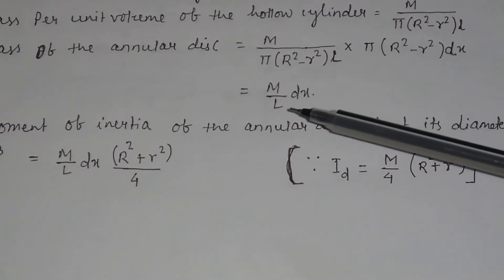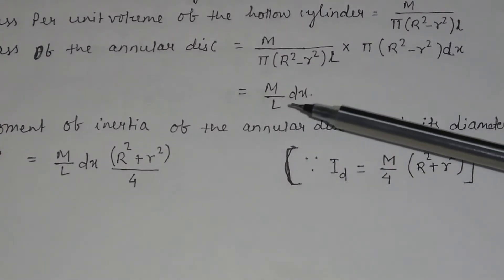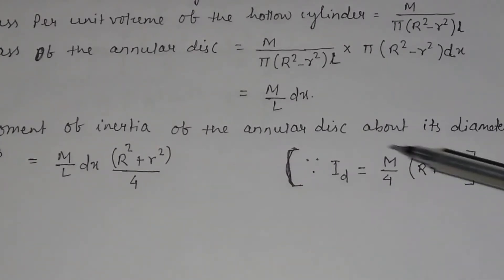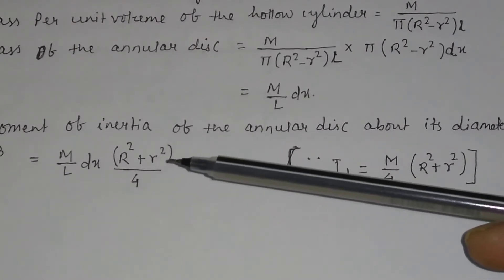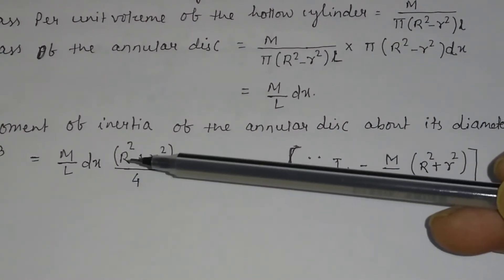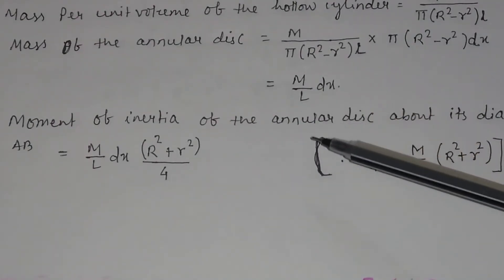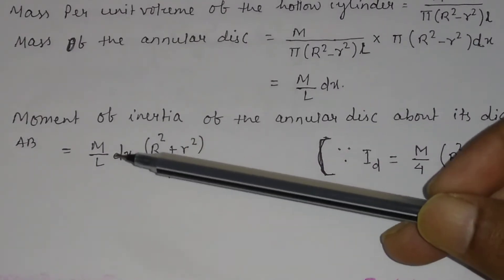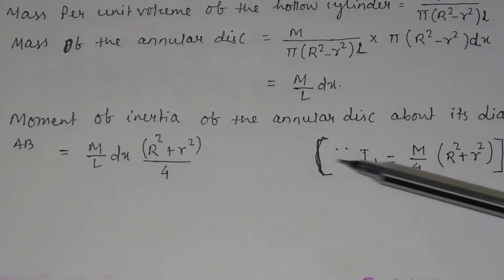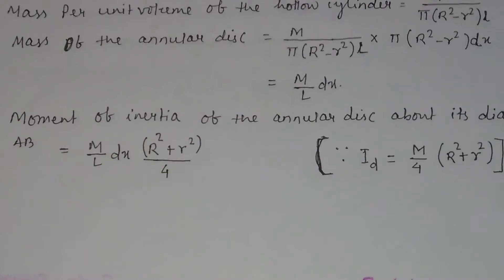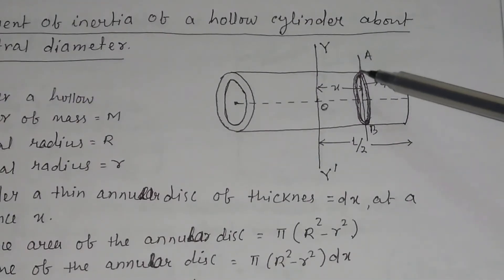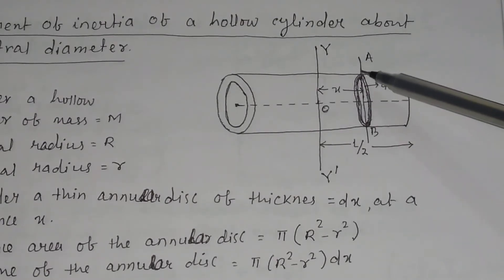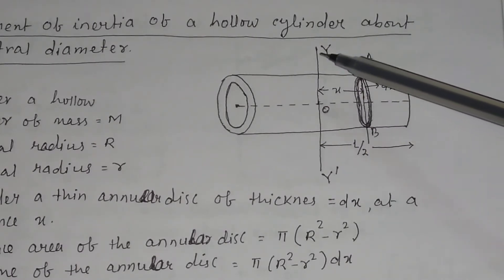Here the mass is m/l × dx, and the moment of inertia about the diameter a-b is (m/l × dx) × (1/4)(R² + r²). This is the moment of inertia about the center of mass. The central diameter a-b and the axis y-y' are two parallel axes, so we apply the parallel axis theorem.